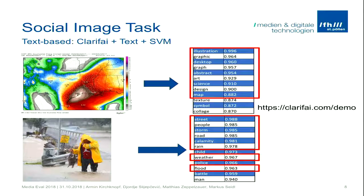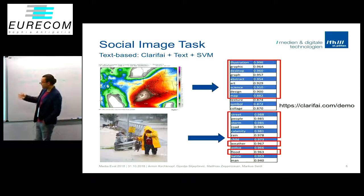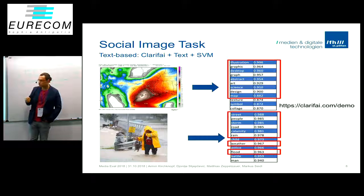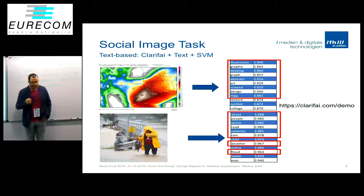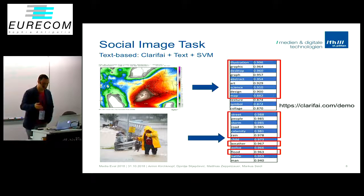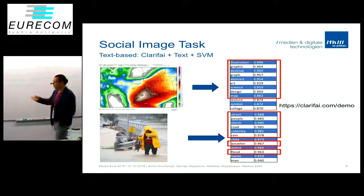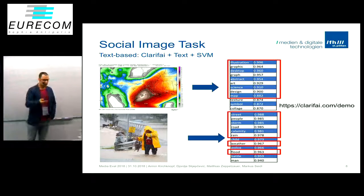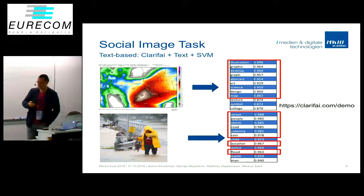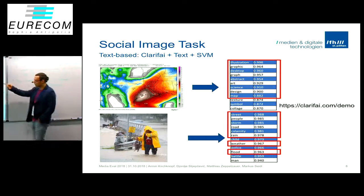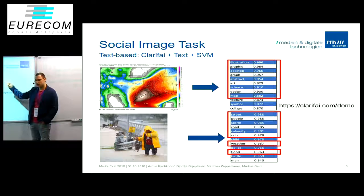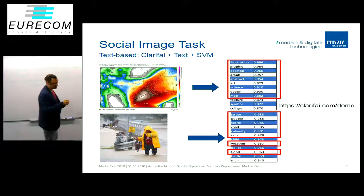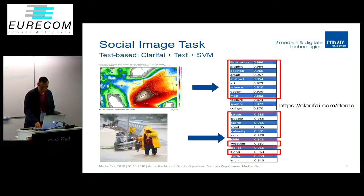For the second approach, we tried to improve our results by using the Clarify API, which is also mentioned in the last MediaEval benchmark. It's a very nice tool where you can input images into this Clarify API — you can see a demo under the hyperlink shown here. The result is a set of tags, such as illustration or graphics, each with a probability. We used these tags as input features for our different runs to improve results.